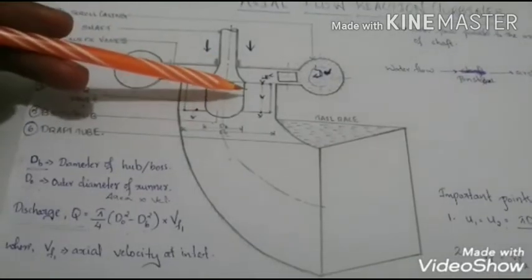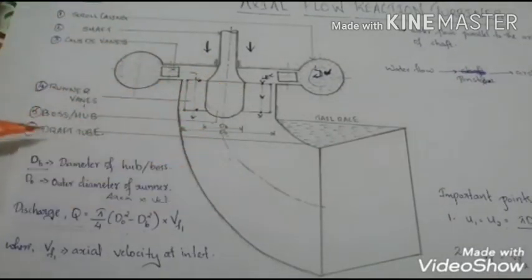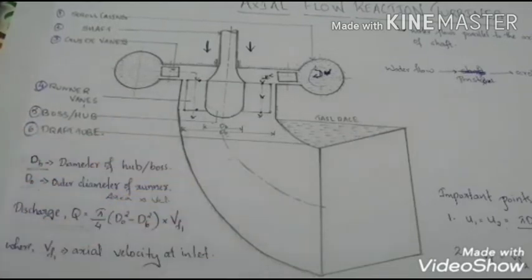And after coming out of the runner vanes, the water flows through the draft tube and is discharged out.